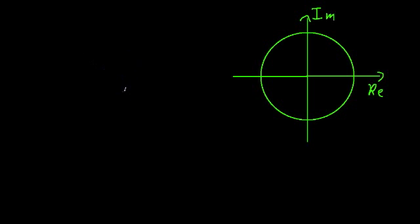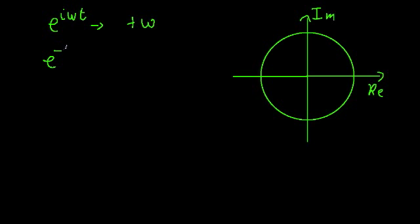In the last video, we learned that the function e raised to the i omega t describes circular motion going around the complex plane in a counterclockwise direction, or circular motion with a frequency of positive omega. We also learned that the function e raised to the negative i omega t describes clockwise motion around the complex plane, or motion with a frequency of negative omega.